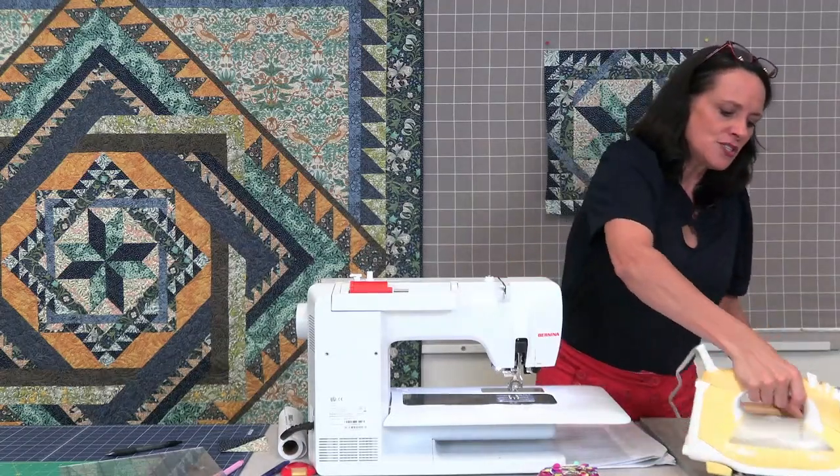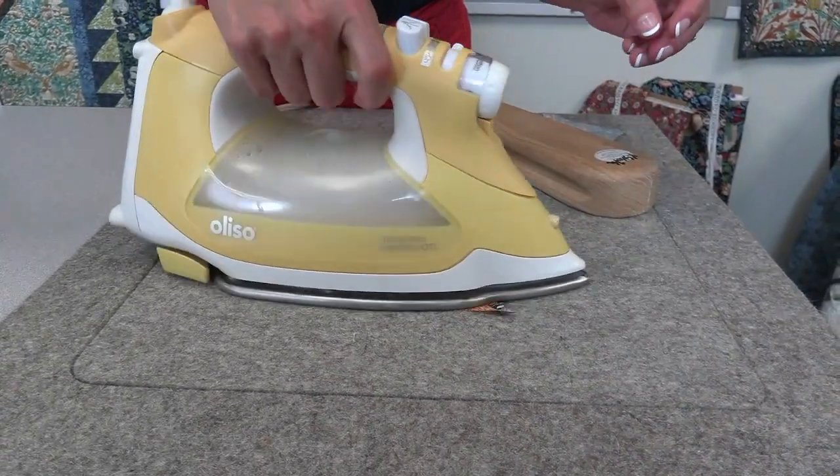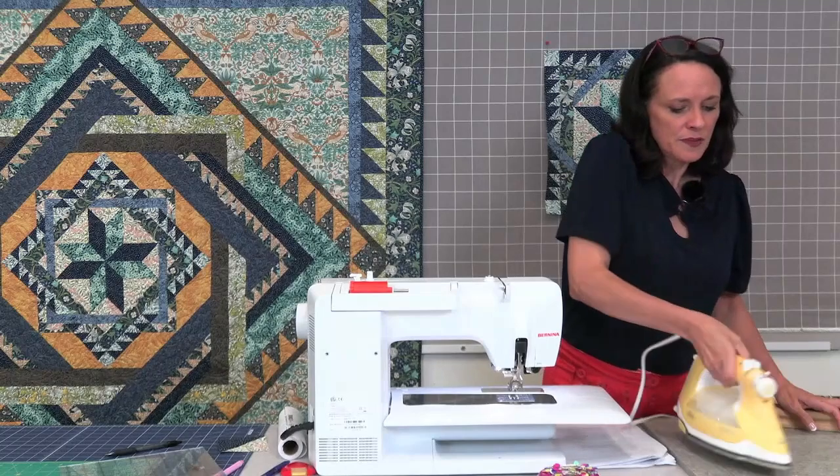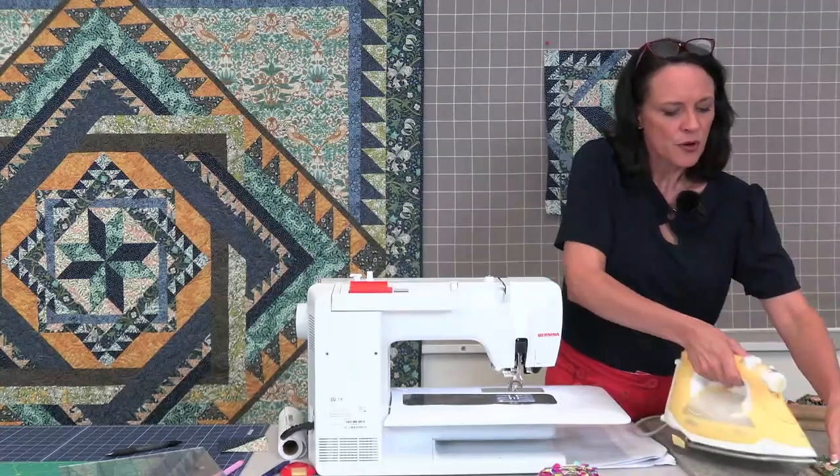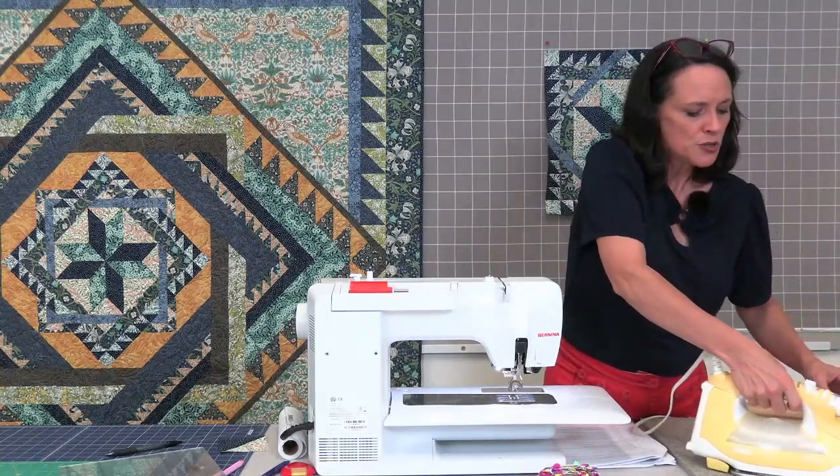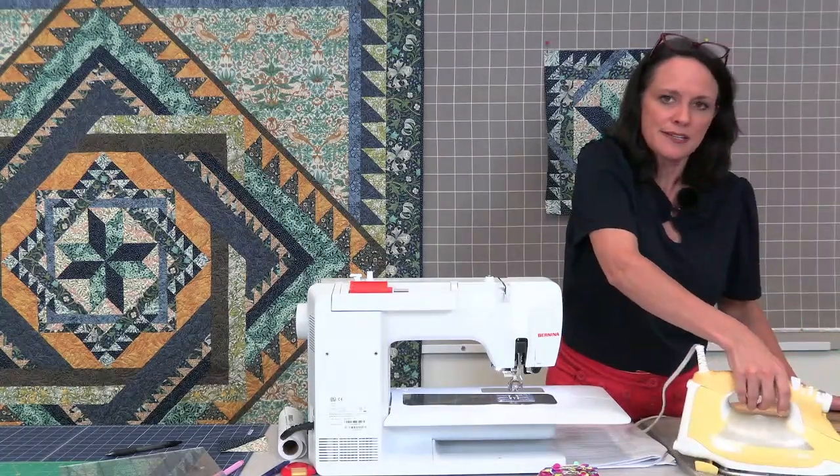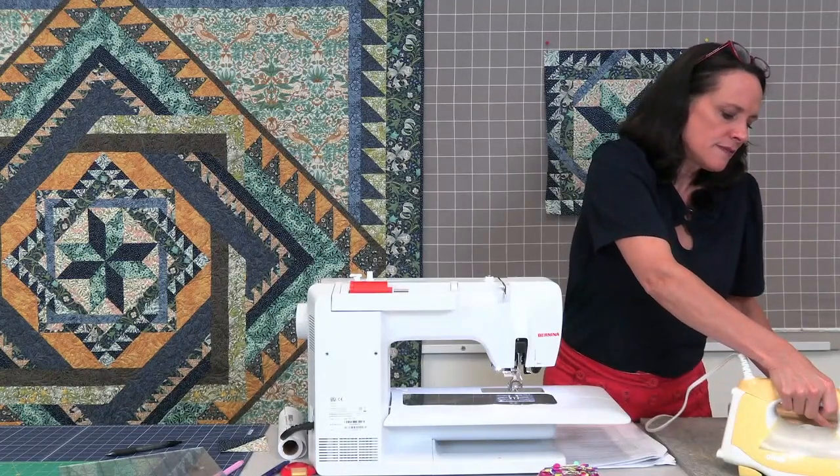So what we're going to do is we're going to lay the fabric down with the dark side up because we're going to press towards the dark side. And normally I just stick an iron on it just up and down to get that seam set in. And then very carefully, you're just going to roll it back. Don't push it too hard because we don't want to stretch that bias, but we're just going to roll it out really well and press it.